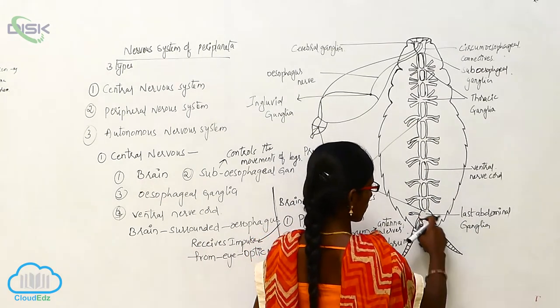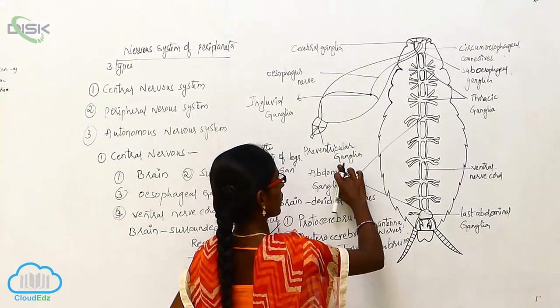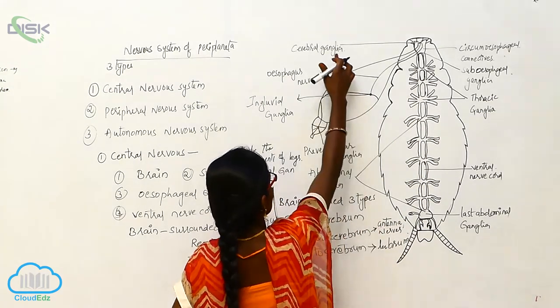This is the last abdominal ganglia and these six are abdominal ganglia. Here the cerebral ganglia.